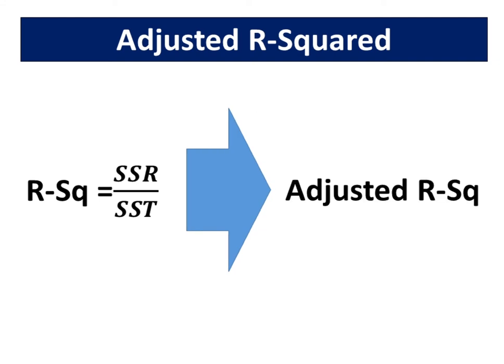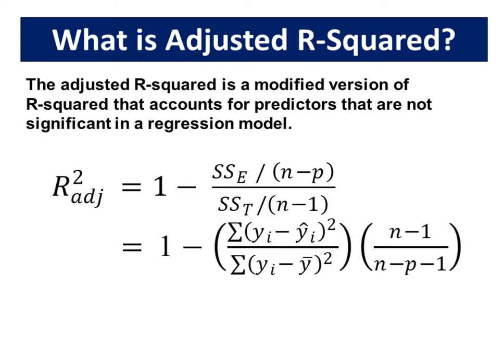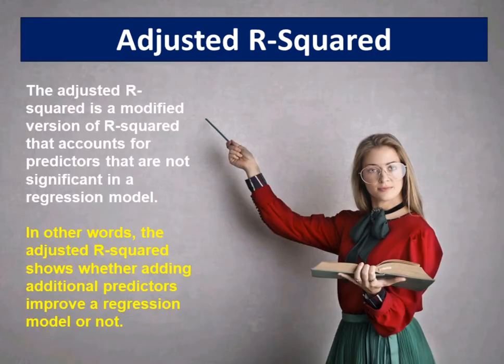Adjusted R-squared should be used while selecting important predictors or independent variables for the regression model. The adjusted R-squared is a modified version of R-squared that accounts for predictors that are not significant in a regression model. In other words, the adjusted R-squared shows whether adding additional predictors improve a regression model or not.